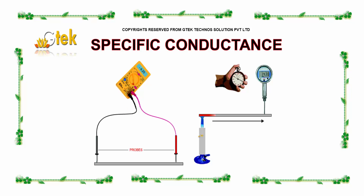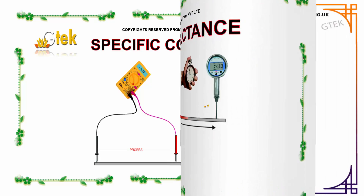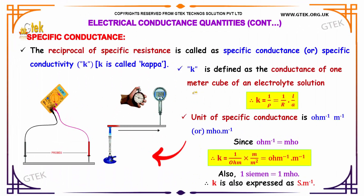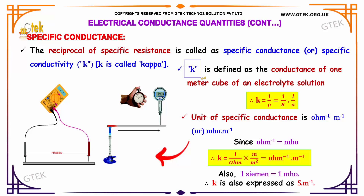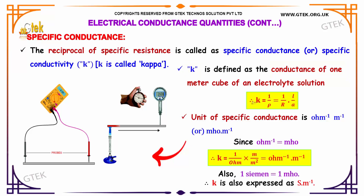Now let's look at specific conductance. Specific conductance is the reciprocal of specific resistance and is indicated by k, called kappa (κ). Kappa k is defined as the conductance of one meter cube of an electrolyte solution.